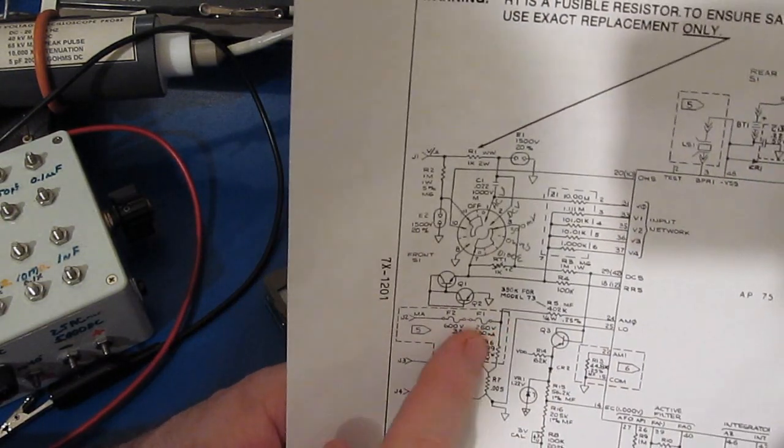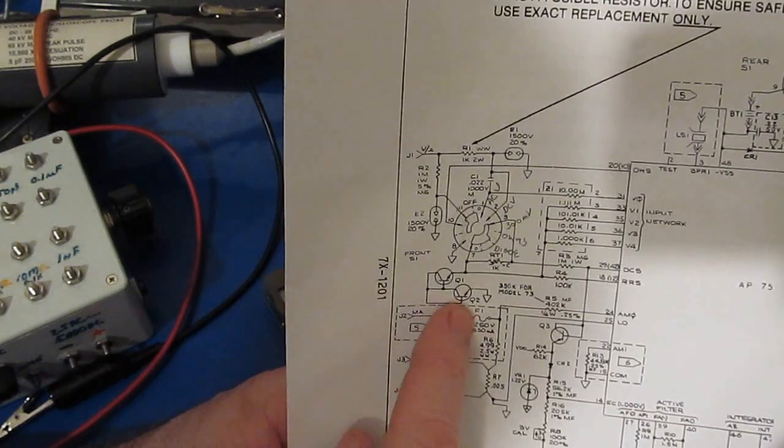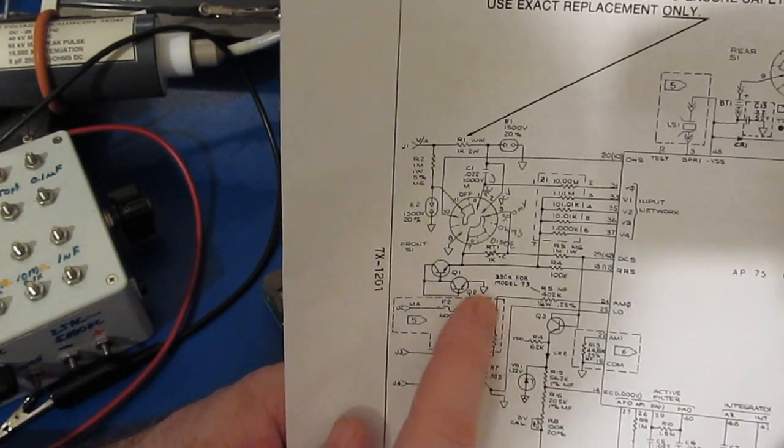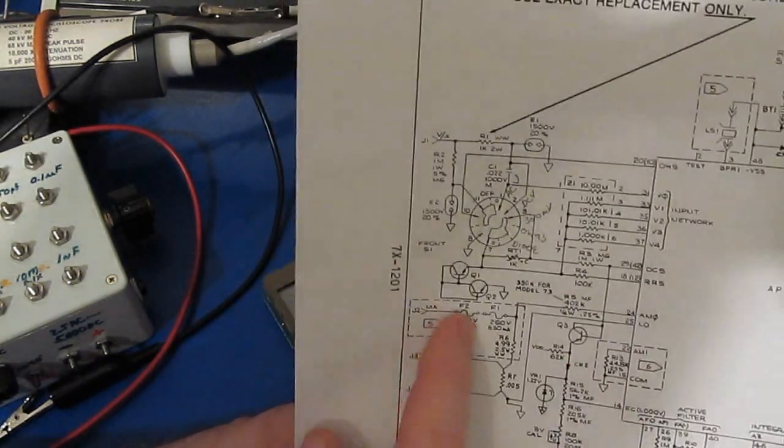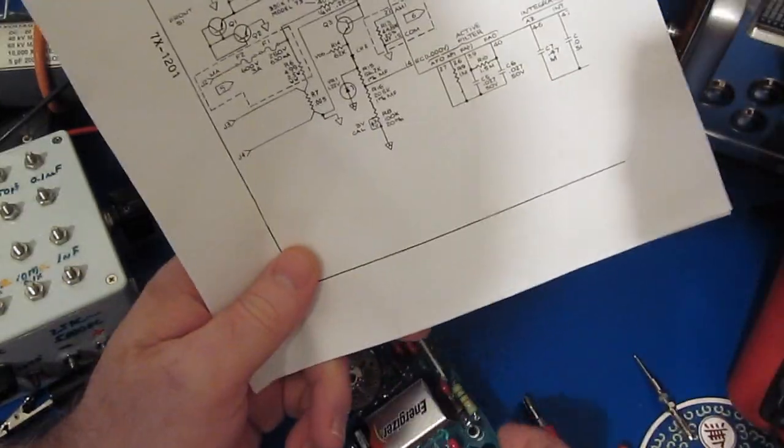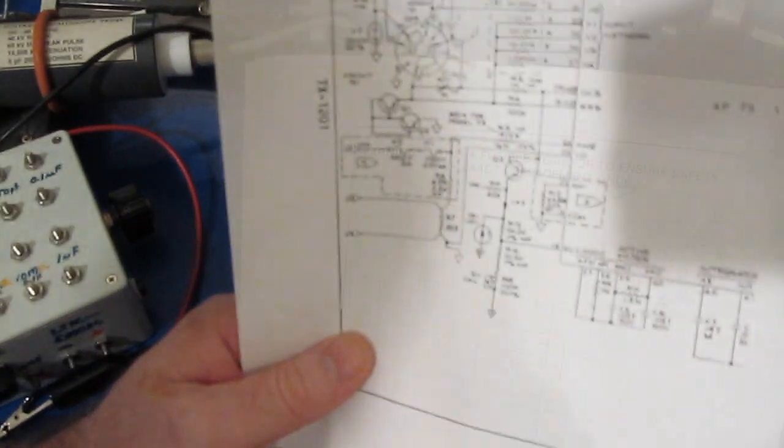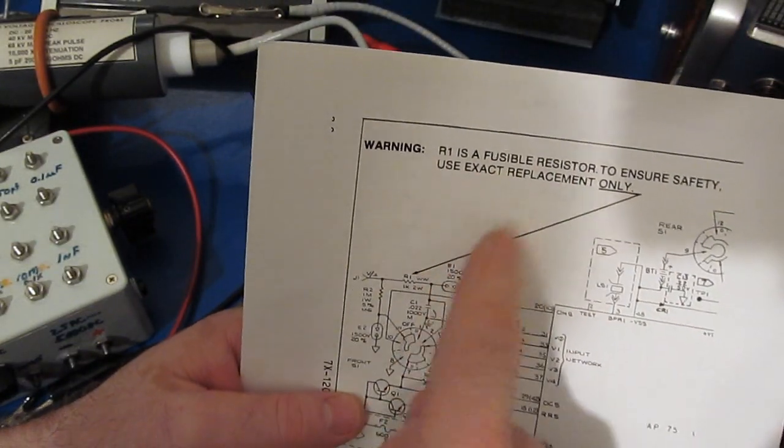In the newer meters they replace this fuse with a resistor and I guess that probably keeps this one from rupturing. And some of the later meters they show this is a larger body style fuse. And then in the newer ones after that it goes back to this smaller case size like we see here.